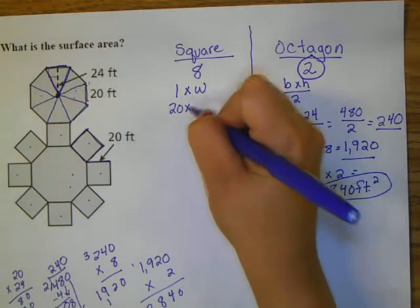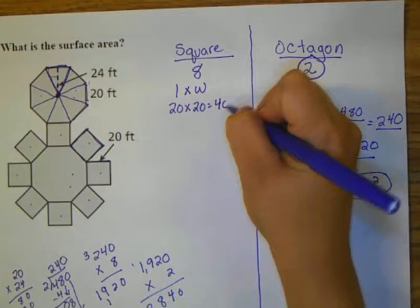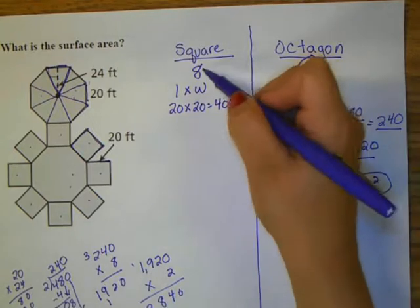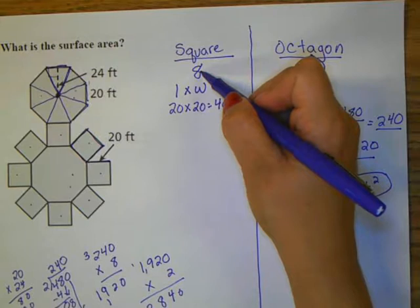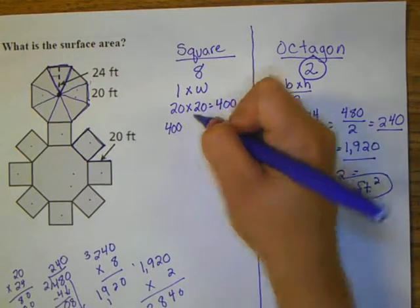Now I know from my diagram that the length of one side is 20 feet, but as a square all sides are the same length. So I'm going to do 20 times 20. Mental math, I know it gives me 400.